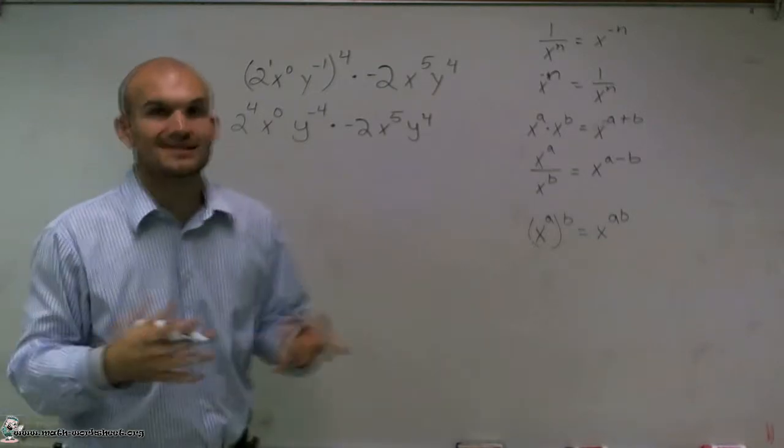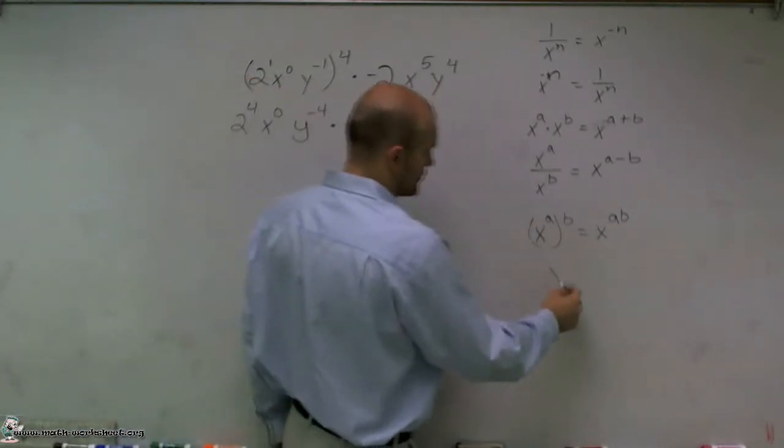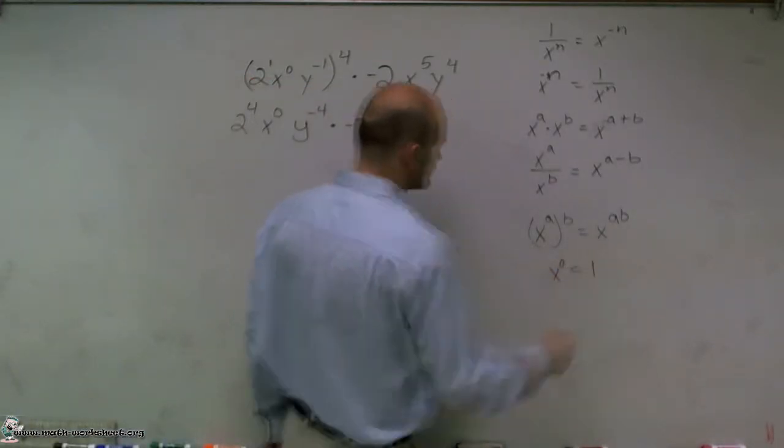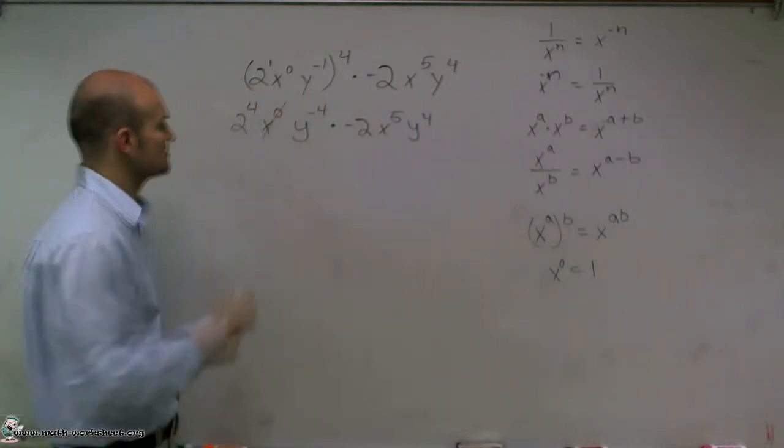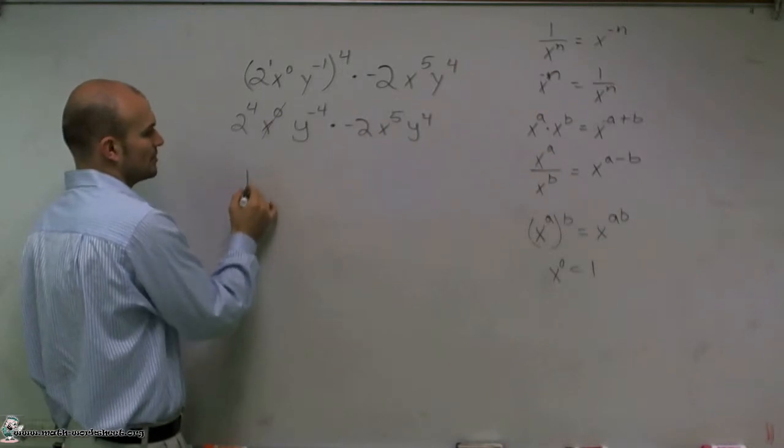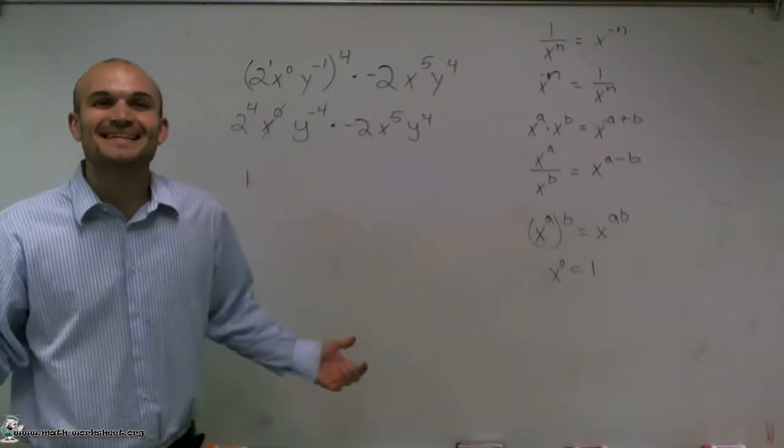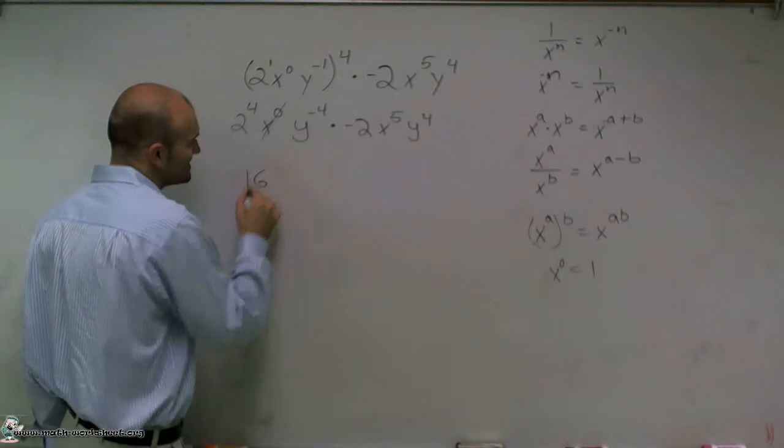Now, x raised to the 0 power is going to equal 1. That's actually another kind of rule we can talk about. So therefore, that's going to equal 1. That's going to just cancel out. 2 raised to the 4th power is going to give me 16.